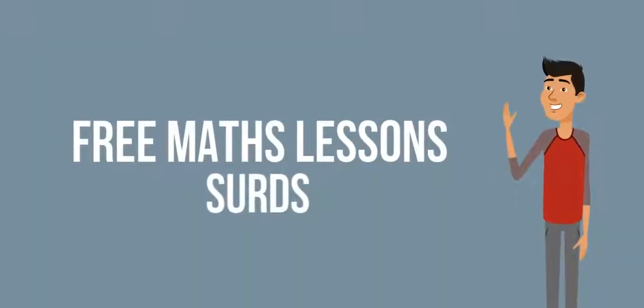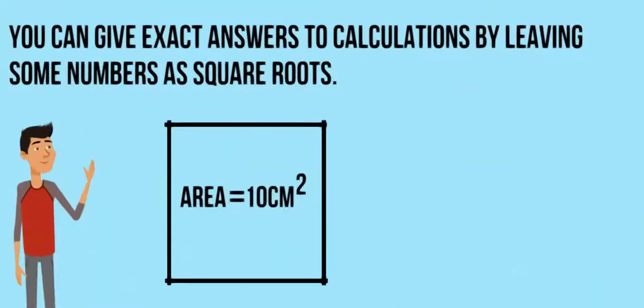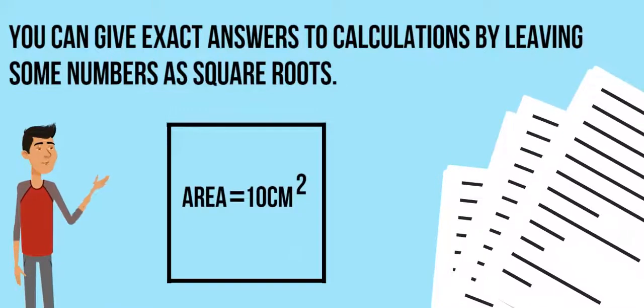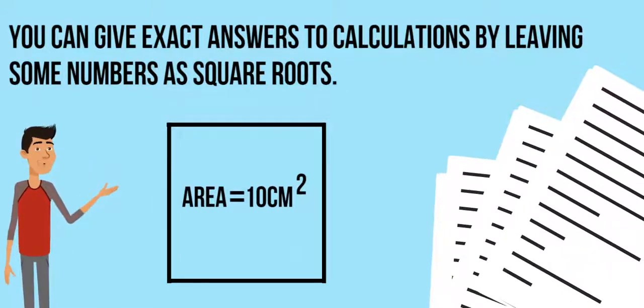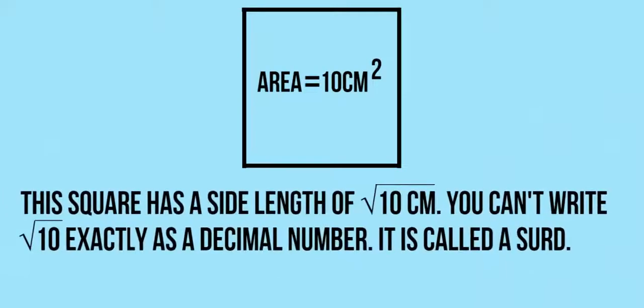Free Maths Lessons: Surds. You can give exact answers to calculations by leaving some numbers as square roots. Here's an explanation.